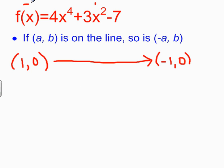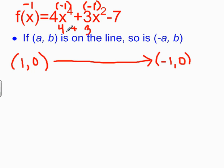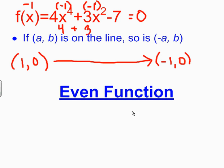So everywhere I have an x, I'm going to put in a negative 1. 4 times negative 1 to the 4th power — if I raise a negative to an even exponent, I get a positive, so this would be 4 times positive 1, or 4. Similarly, negative 1 squared — a negative times a negative gives me a positive, so this is positive 1, and 3 times positive 1 is 3. 4 plus 3 is 7, minus 7 gives me back 0, which is what I expected. So this is an even function, since the points 1 comma 0 and negative 1 comma 0 are both on the curve.